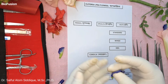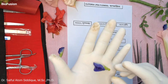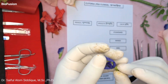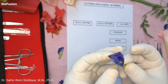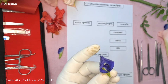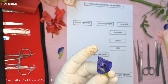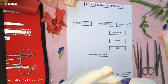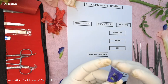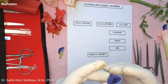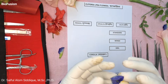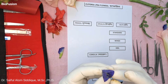You will need a Clitoria flower. The Clitoria flower is a very interesting flower. It is called Clitoria ternatea and is commonly known as butterfly pea flower and blue flower, also called blue tea.